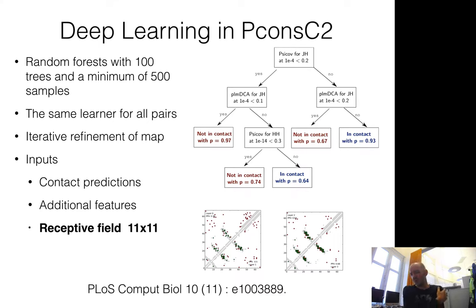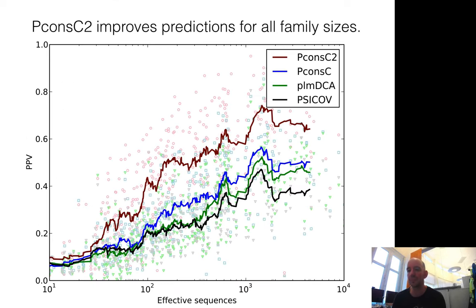We did this using a deep learning approach with random forests, a machine learning method. We trained this system and used a field of 11x11 to look at these contacts. As we see here, it's better than the input methods quite significantly, independent of size. However, these methods work very well on large families but not so well on small families.